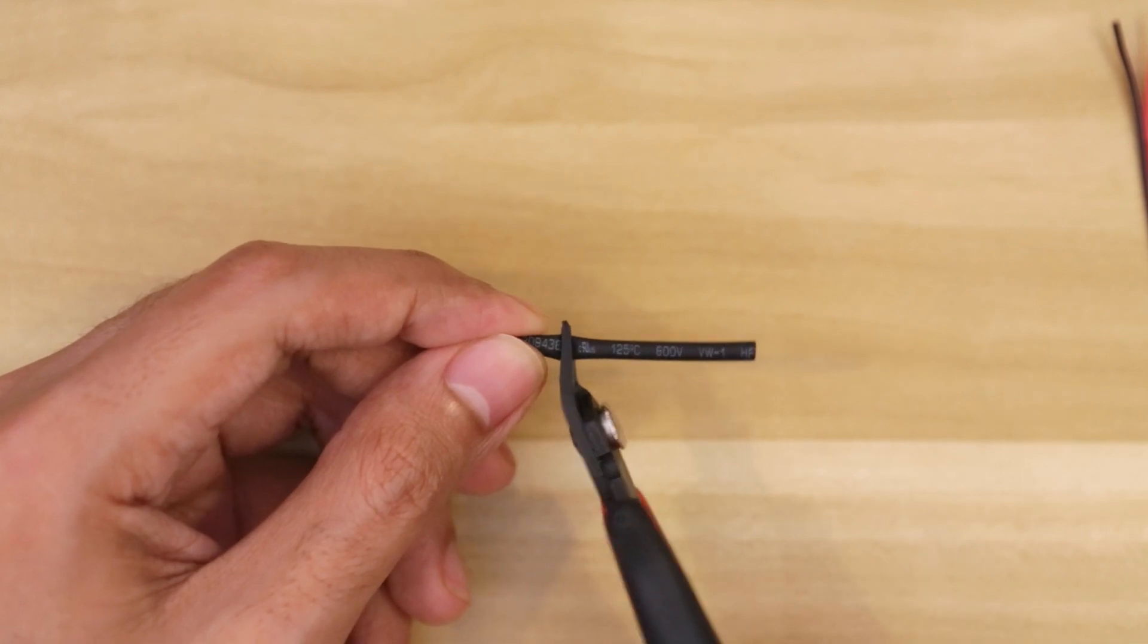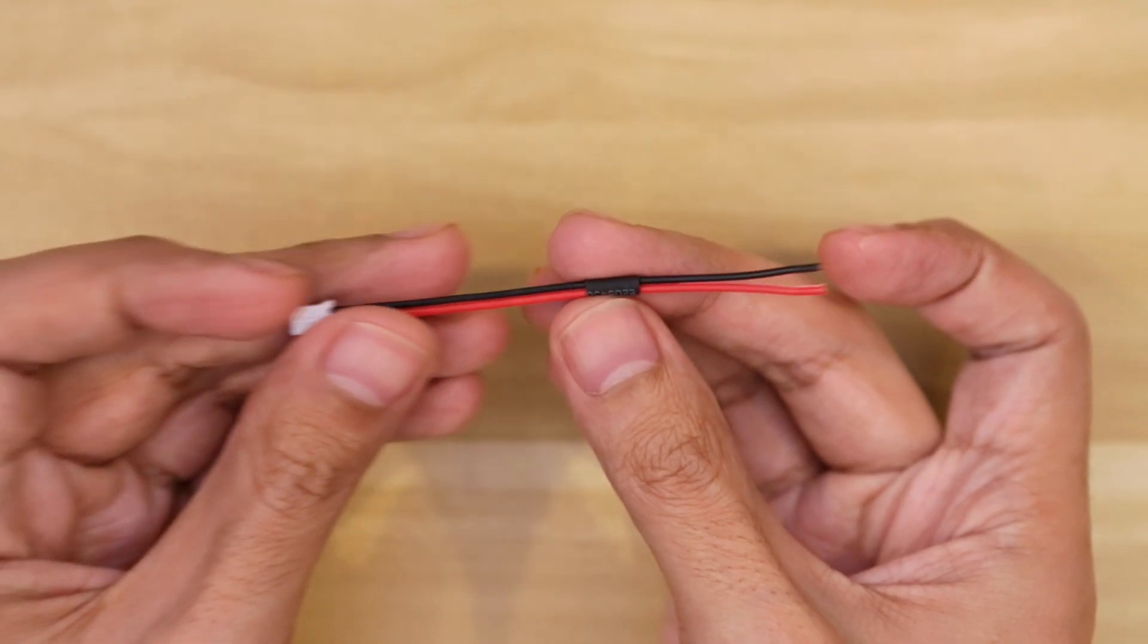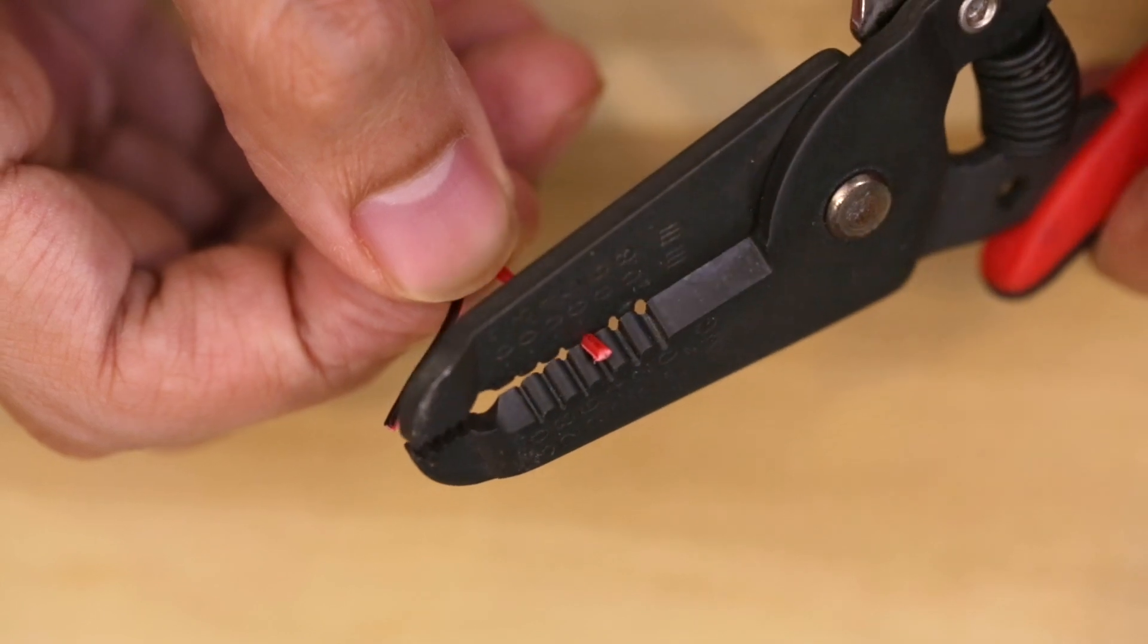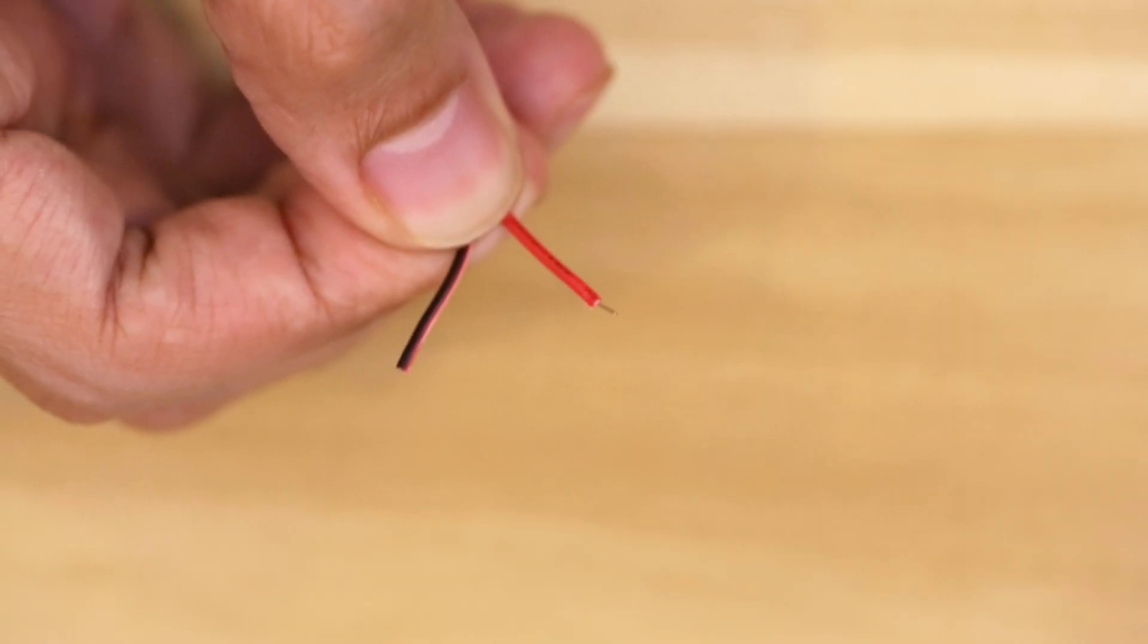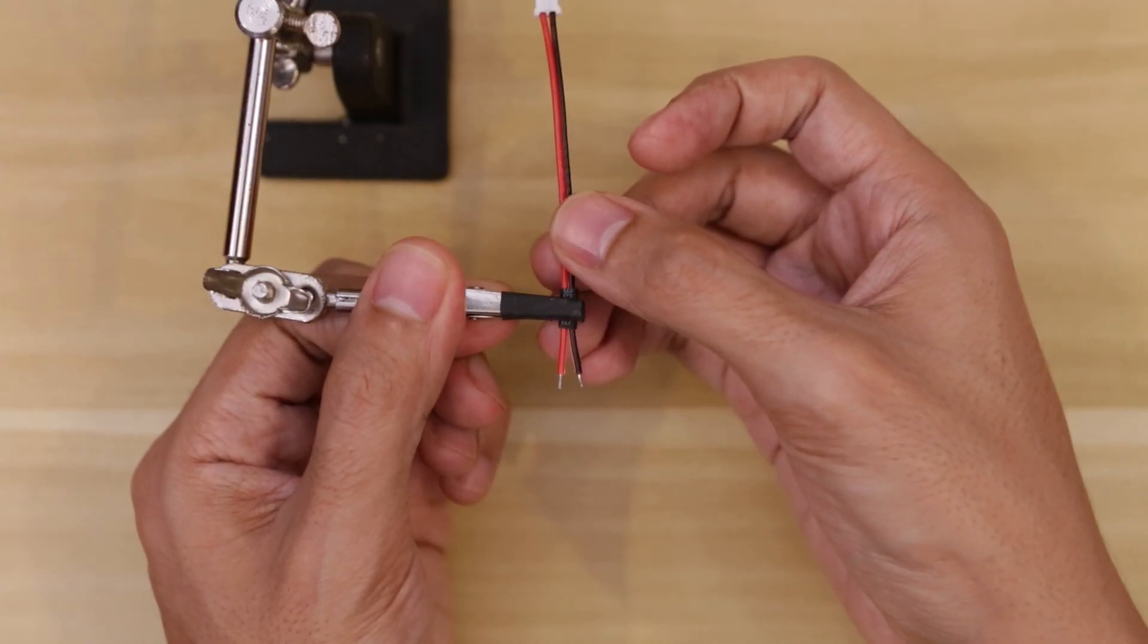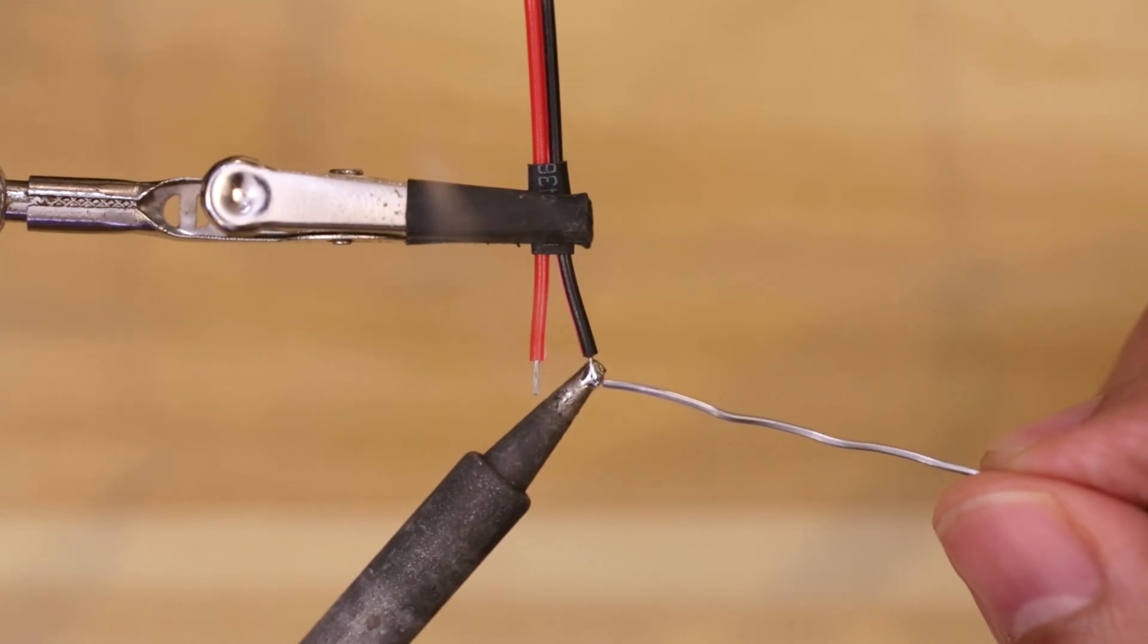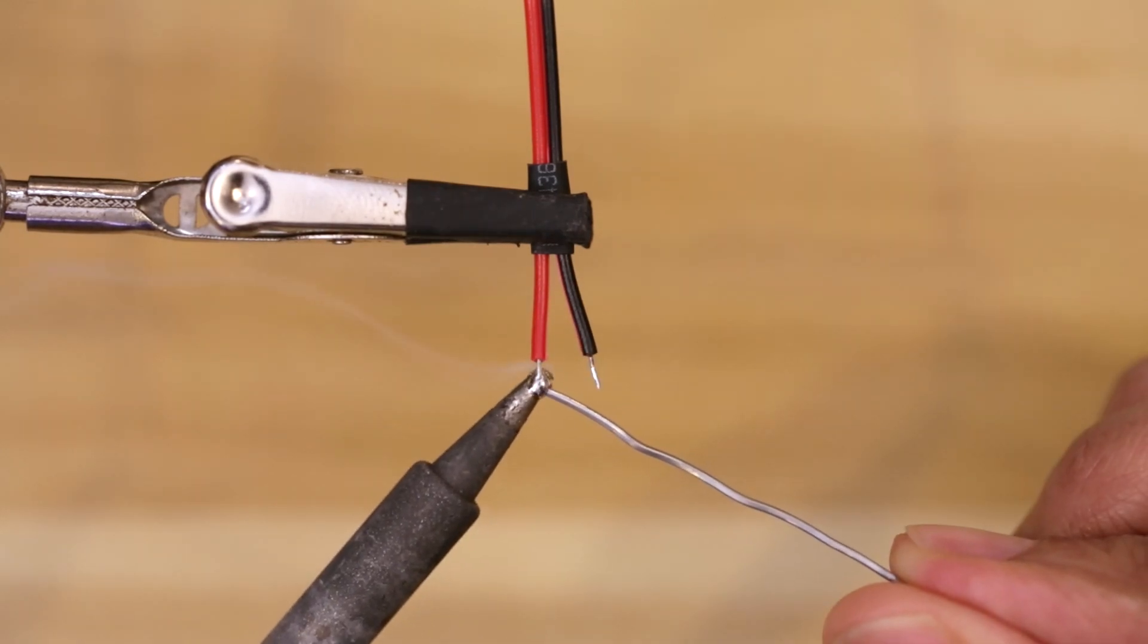Pieces of heat shrink tubing will help insulate our connection so we don't short anything out. Using wire strippers I'll remove a bit of insulation from each wire and then secure the cable onto the third helping hand. Now I can tin the strands of wire by adding a tiny bit of solder and this just makes it easier to attach them to connectors.